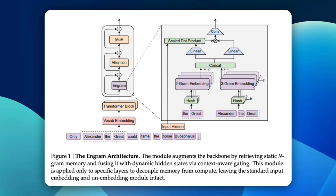Ngram separates those roles. Think of it like a cyborg brain. One part of the system handles dynamic computation — logic, semantics, planning, reasoning, code structure. The other part handles static memory: massive knowledge storage, retrieved only when needed, with no reasoning — just recall.